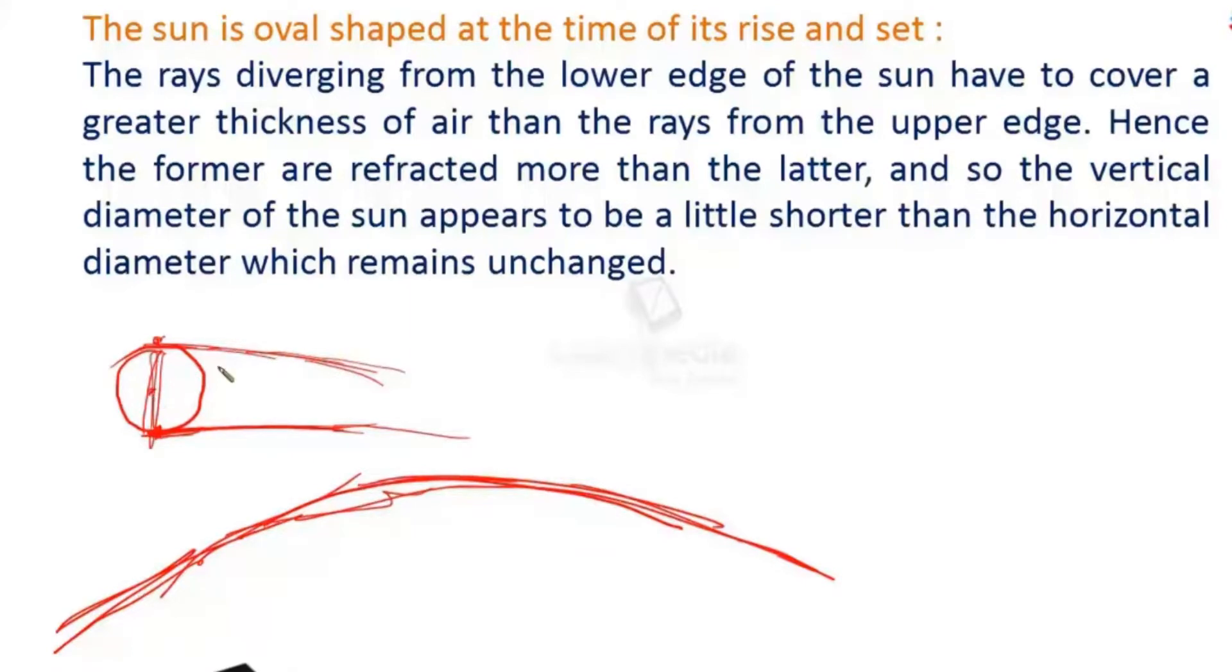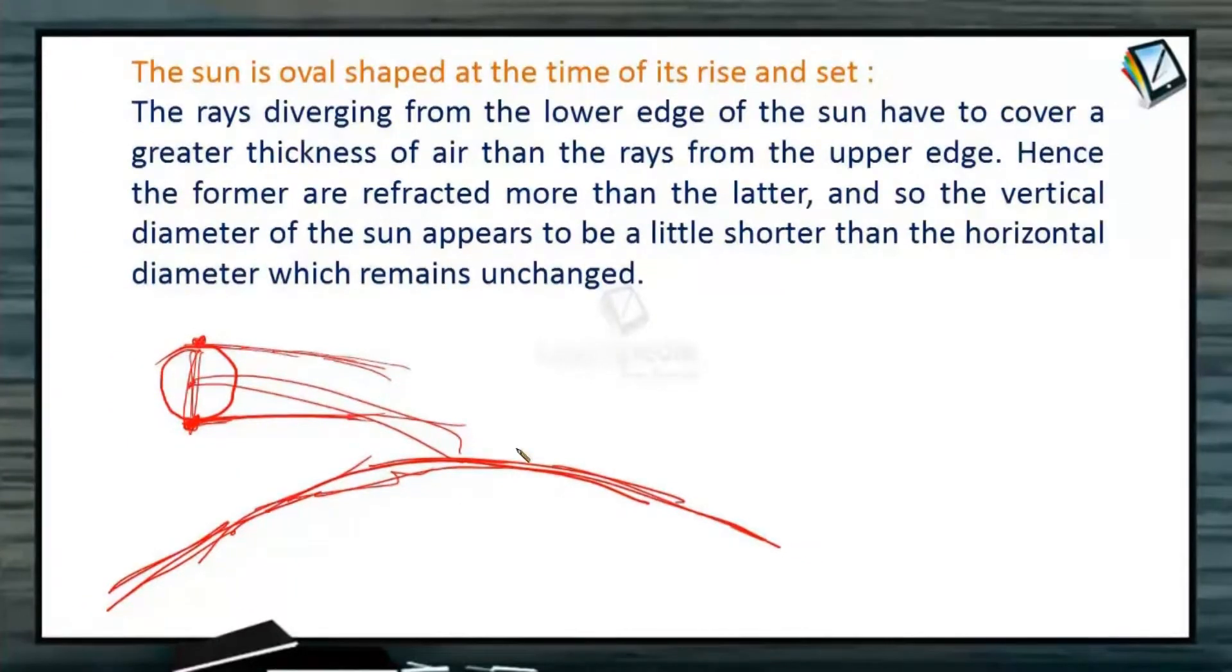Because from horizontal on both sides the situation is the same. But on the vertical line, the light rays from the bottom edge cover more distance in air than the light ray from the upper edge. And because of that, change in size happens. That is due to refraction.